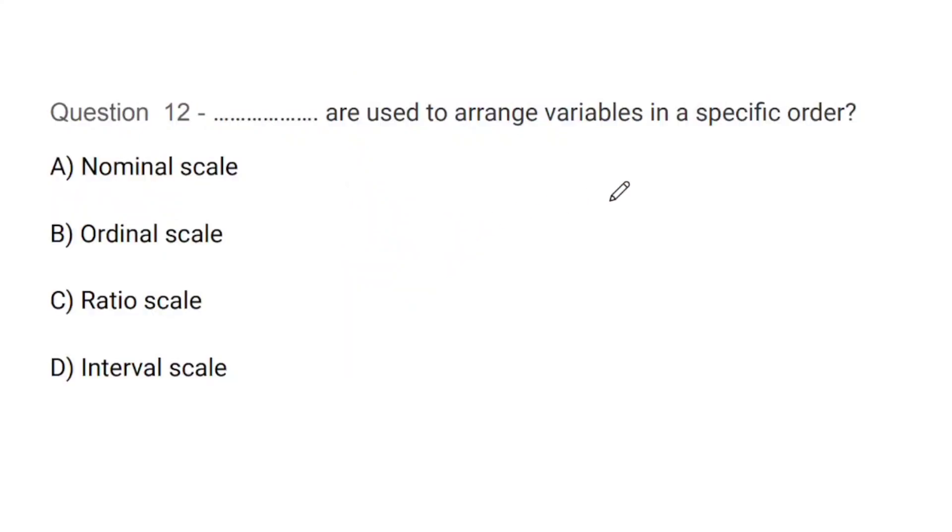Question number 12: Which scale is used to arrange variables in a specific order - nominal scale, ordinal scale, ratio scale, or interval scale? The correct answer is B, that is ordinal scale.